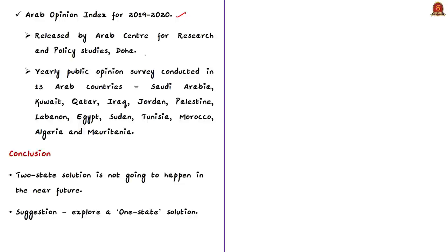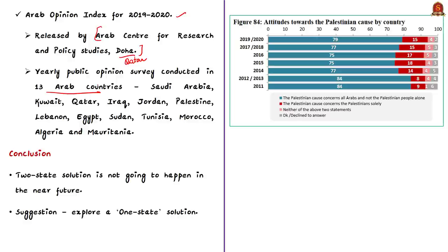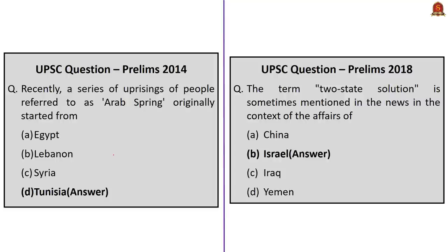The change in Arab perceptions of the Palestinian issue is also visible from the Arab Opinion Index for 2019–2020, released by the Arab Center for Research and Policy Studies in Doha — a yearly public opinion survey conducted in about 13 Arab nations. As per the report, 79% of the Arab public agree that the Palestinian cause concerns all Arabs and not the Palestinians alone. Based on these findings, the author concludes that the two-state solution is not going to happen in the near future, and instead suggests exploring a one-state solution — a unitary, federal, or confederate Israeli-Palestinian state encompassing all of present Israel, the West Bank, and possibly the Gaza Strip and Golan Heights. Note that the Indian government has committed to and supported the two-state solution.